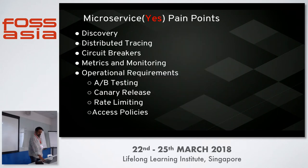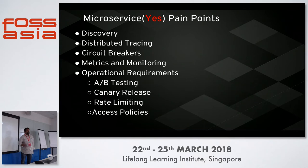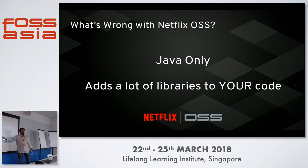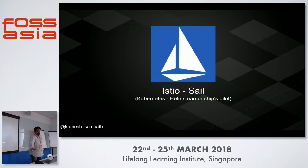Even with all these things, we still have a few problems. These are typical microservices pain points: discovery, tracing, circuit breakers, and operational requirements like A/B testing, canary releases, rate limiting, and access policies — who can access what. These become more critical as your microservices keep growing. For this talk, I'll focus on distributed tracing. Right now predominantly we have only Java libraries for distributed tracing. If you want to write tracing in other languages, you have to write your own library, which is painful — for every polyglot language you write microservices in, you have to write the library.